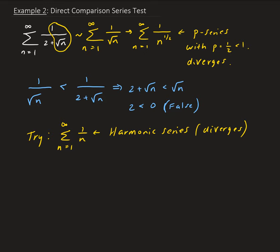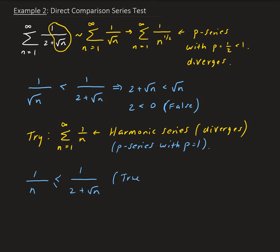Remember, 1 over n is a p-series with p equals 1. Now let's set up our inequality. We want to show that 1 over n is less than 1 over 2 plus root n. This is actually true if we start from n equals 4. For n equal to 4 these are actually equal, and for anything higher than 4, 1 over n would be strictly less than 1 over 2 plus root n. So this is true for n greater than or equal to 4.